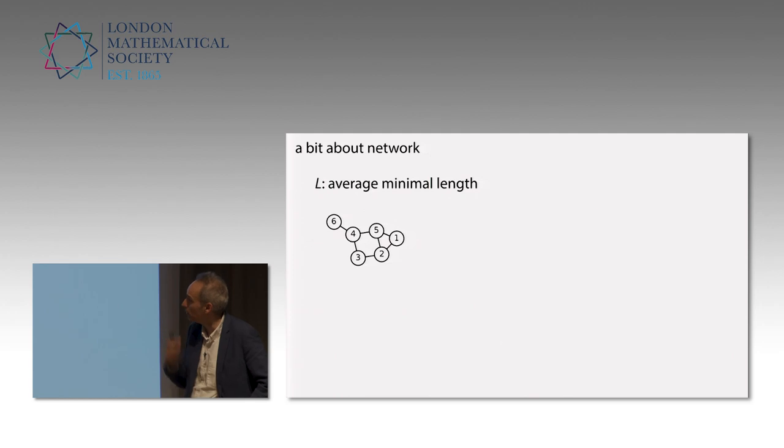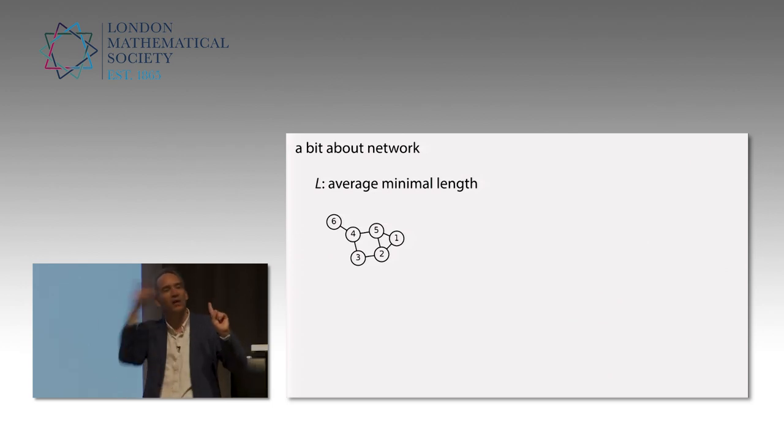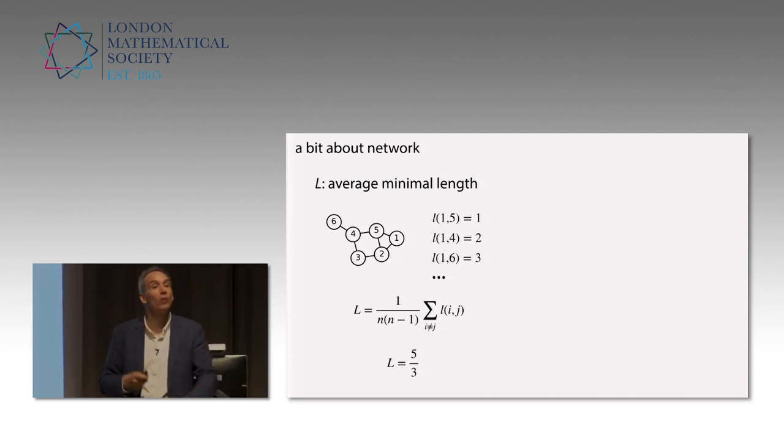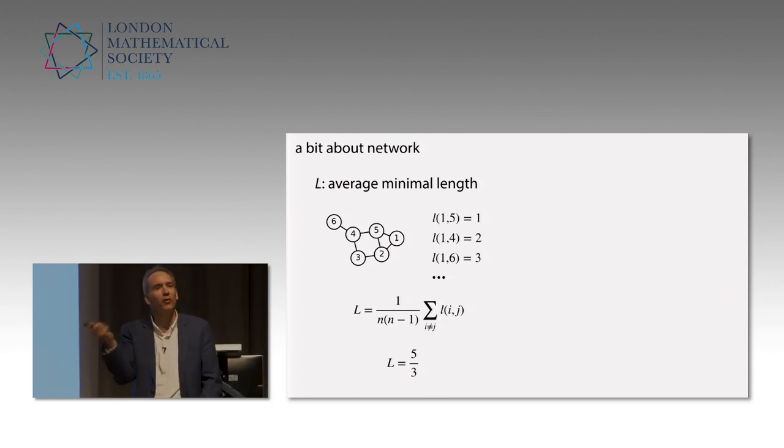Let me tell you about networks. What you can do, one of the simplest things, is look at a number. You want to give one number for the entire network. This is the average minimal length, which gives you, on average, how long does it take to go from two random nodes? If I pick two random nodes, what is the distance if I count one every time I stop at one node? You look for the distance between one and five. They're connected, so that's one. Distance between one and four is two. Between one and six is one, two, three. That's the shortest path. I do that for all of them and average. In that case, it's quite simple, it's five-thirds. That's the average length between two random nodes.